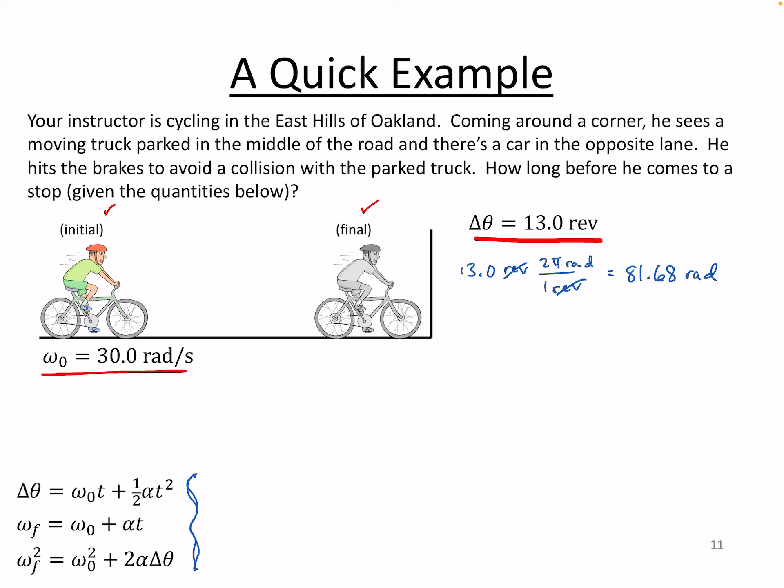Now what do we know? Well, we know initial angular velocity, and if I've stopped, well, then we know that the final angular velocity of my tires is zero radians per second, and we know Δθ, the angular displacement of my tires.